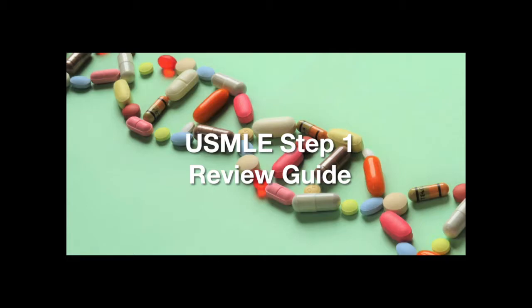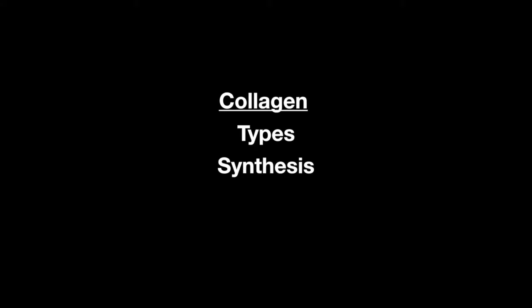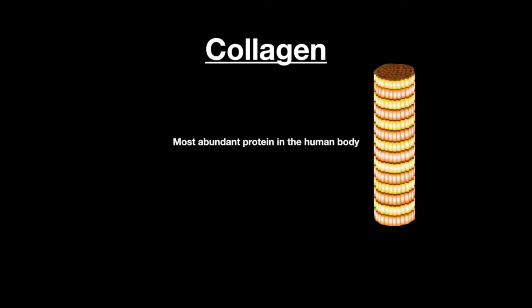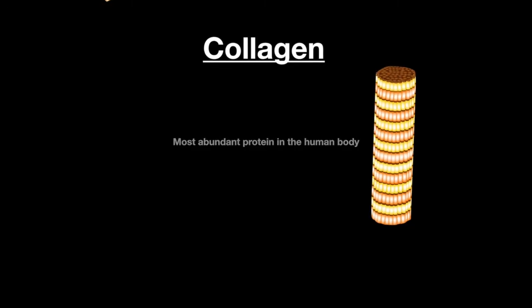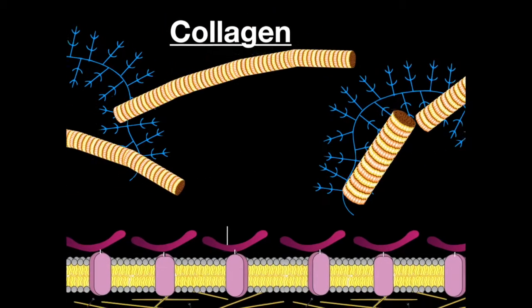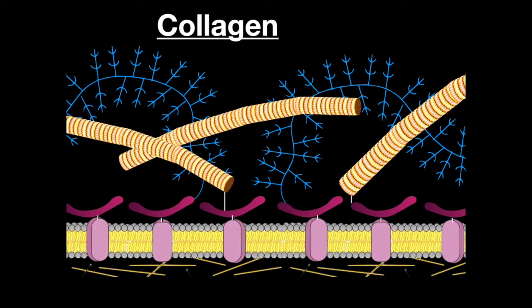Welcome to the Step 1 Review Study Guide. In this lesson, we learn about collagen — the types of collagen, synthesis, and structure. Collagen is the most abundant protein in the human body. It functions to strengthen the extracellular matrix as well as organize it.